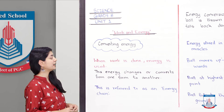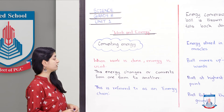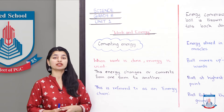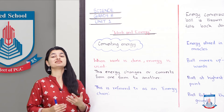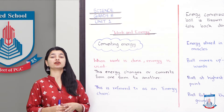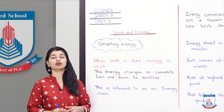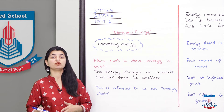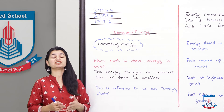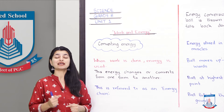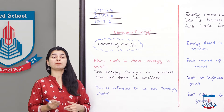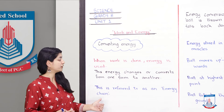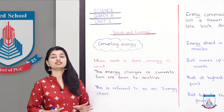When work is done, energy is used and it changes or converts from one form to another. Just as when you apply force and move something a distance, energy is required. That energy does not vanish — what actually happens is that energy changes the form it is in. This is referred to as an energy chain. It becomes a whole chain: one action changes the form of energy, and then it converts further.